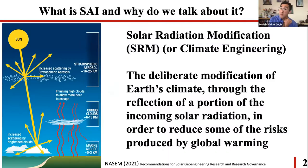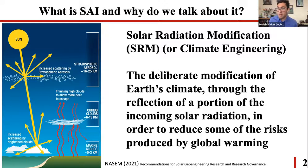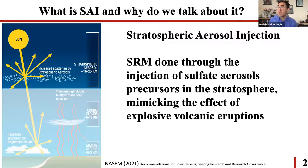This is where solar radiation modification, or climate engineering, or geoengineering, comes in. This figure is from a National Academies of Sciences, Engineering, and Medicine report from last year with recommendations for research and governance of geoengineering. Geoengineering — also per the IPCC — is defined as the deliberate modification of the Earth's climate through reflection of a portion of incoming solar radiation to reduce risk from global warming. The three main methods discussed are marine cloud brightening, cirrus cloud thinning, and stratospheric aerosol injection. I'll focus on SAI.